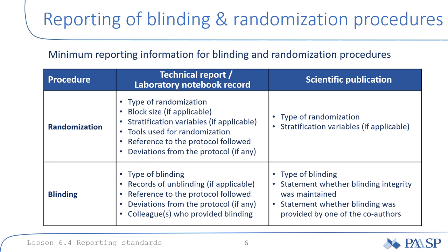This is what needs to be reported as a minimum, and for many procedures and in many reporting guidelines, such minimum reporting information is clearly defined. But also when you decide not to implement certain measures — and there are of course situations where it is simply not possible or required to blind or randomize — again, be open and transparent about it and explain the reasons for such decisions.